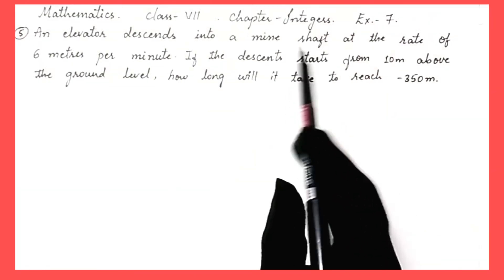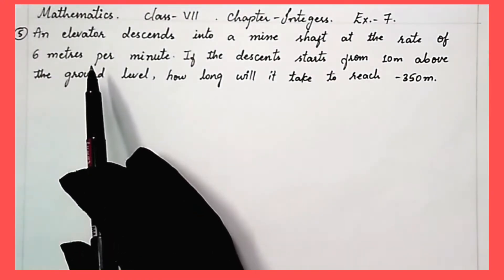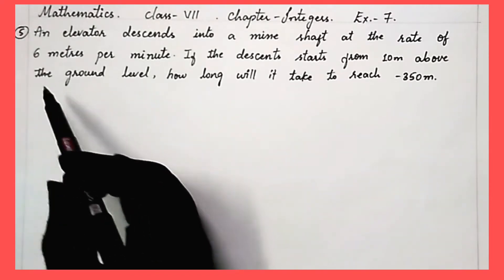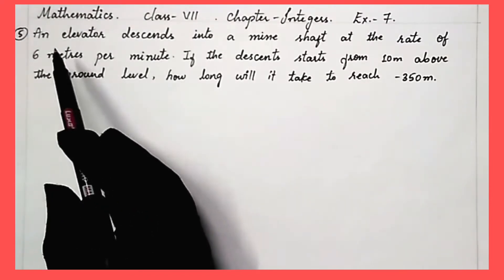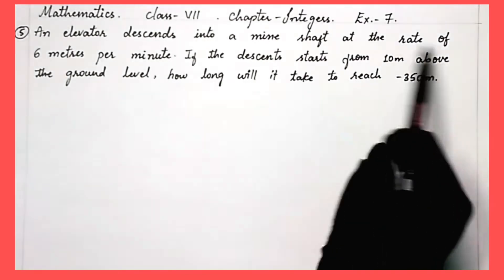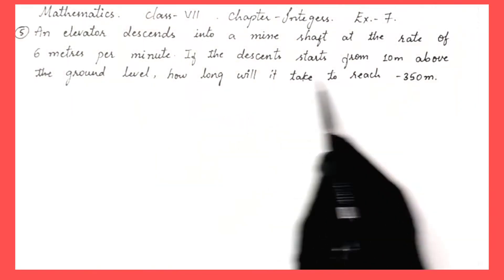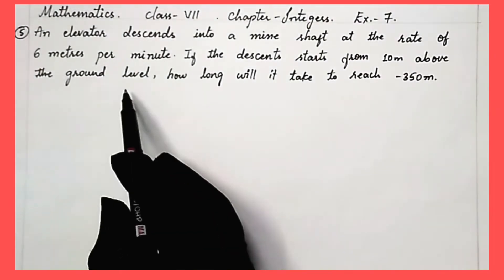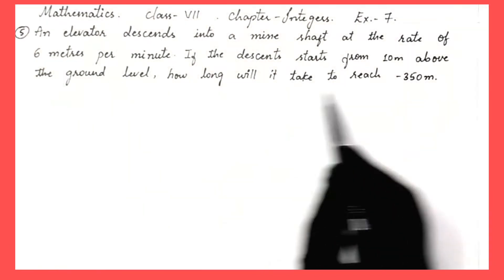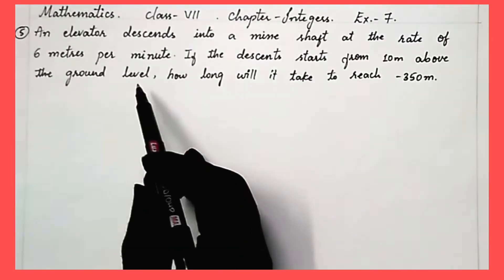Of Class 7, Chapter Integers, Exercise 7, we are going to solve question number 5 today. So let's read the question first. An elevator descends into a mine shaft at the rate of 6 meters per minute. If the descent starts from 10 meters above the ground level, how long will it take to reach -350 meters?